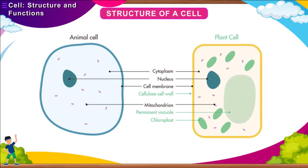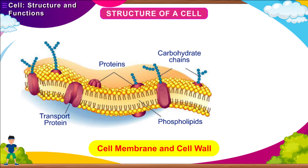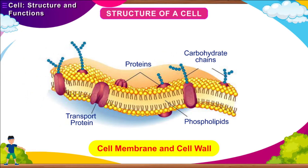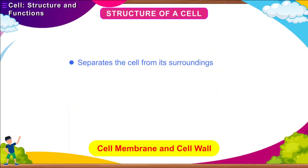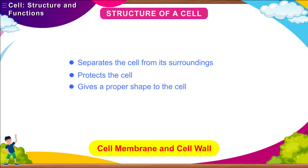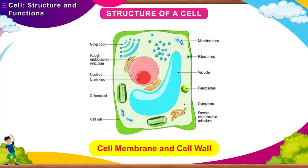Structure of a Cell: Cells may vary in shape, size, and function but their structure typically consists of cell membrane, cytoplasm, and nucleus. The cytoplasm is a jelly-like substance that makes up most of the cell, and all life-giving processes take place in the cytoplasm. Cell organelles are present in the cytoplasm. The cytoplasm is surrounded by a thin membrane called the cell membrane or plasma membrane. It separates the cell from its surroundings, protects the cell, gives proper shape to the cell, and allows water and other necessary substances to pass through it. Plant cells contain a cell wall along with the cell membrane to provide extra strength.